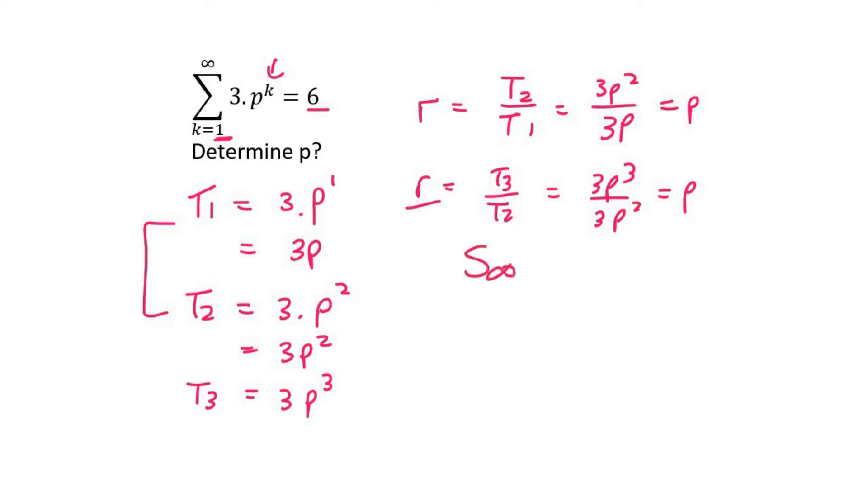Now we know that sum to infinity is a over 1 minus r. The sum to infinity is 6. a is term 1, which is 3p. See how I just plug it in? I don't really worry about p. I just plug it in as it is. Then r is p.